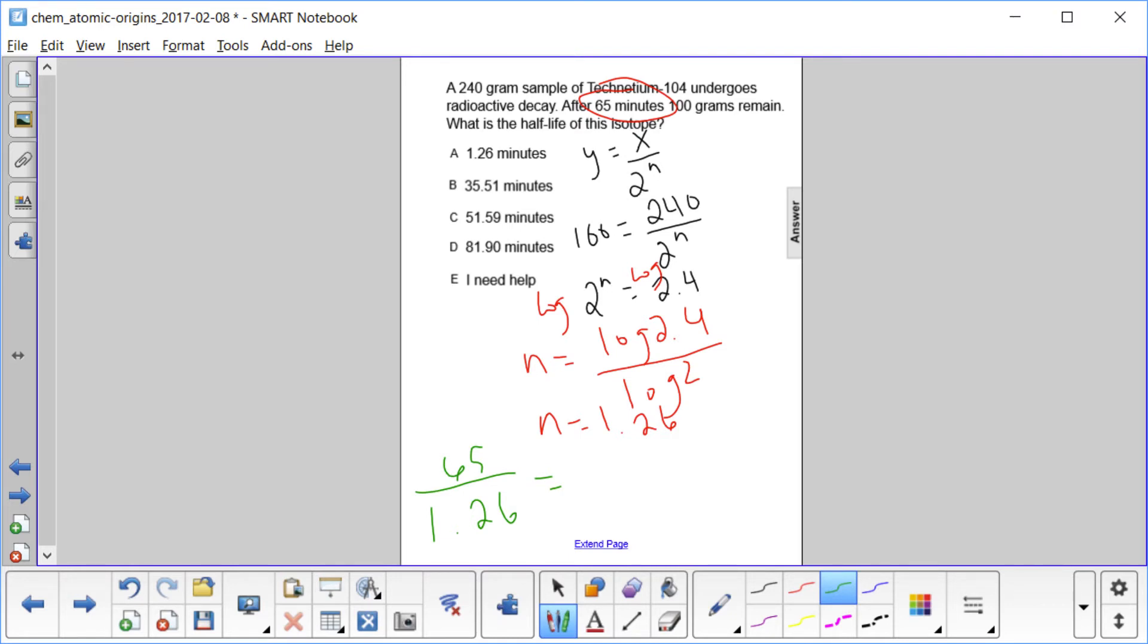So 65 divided by 1.26 is 51.59 minutes, which is answer choice C.